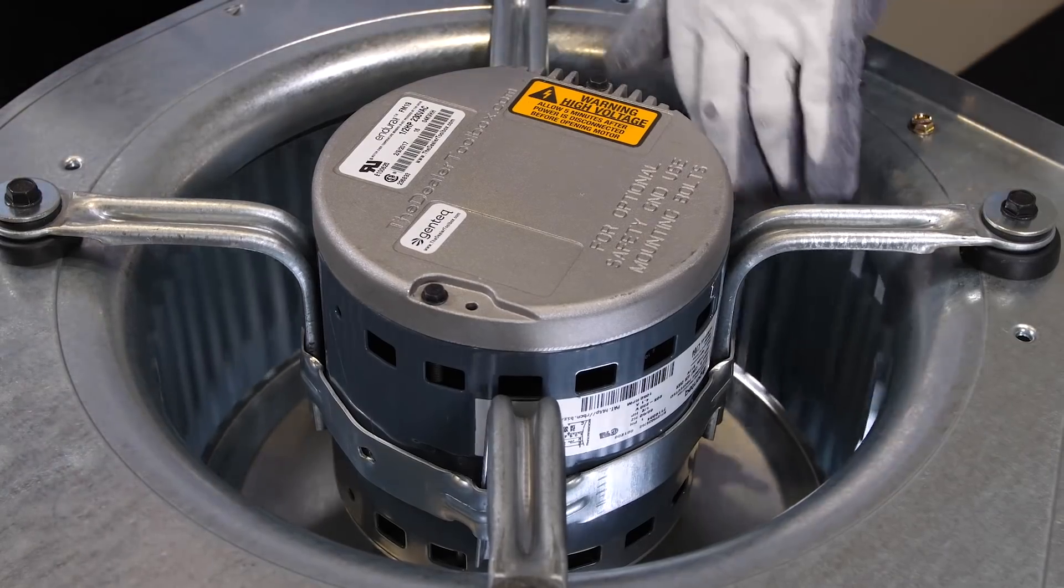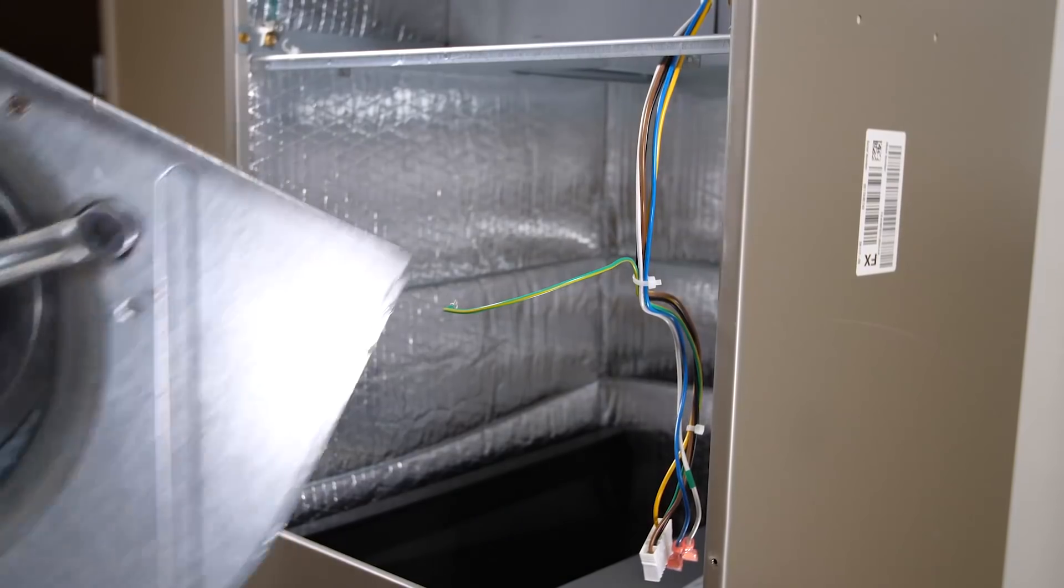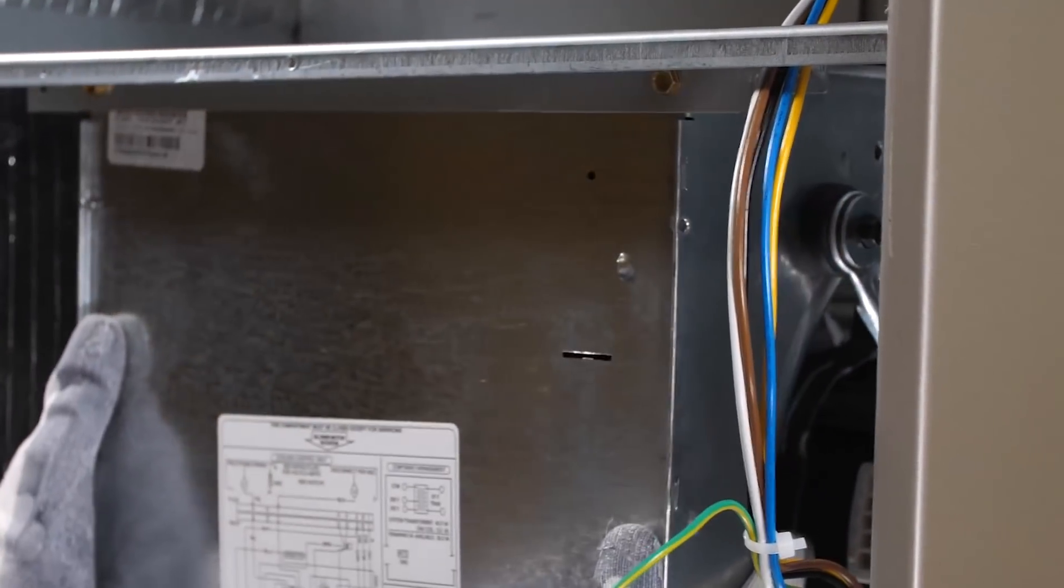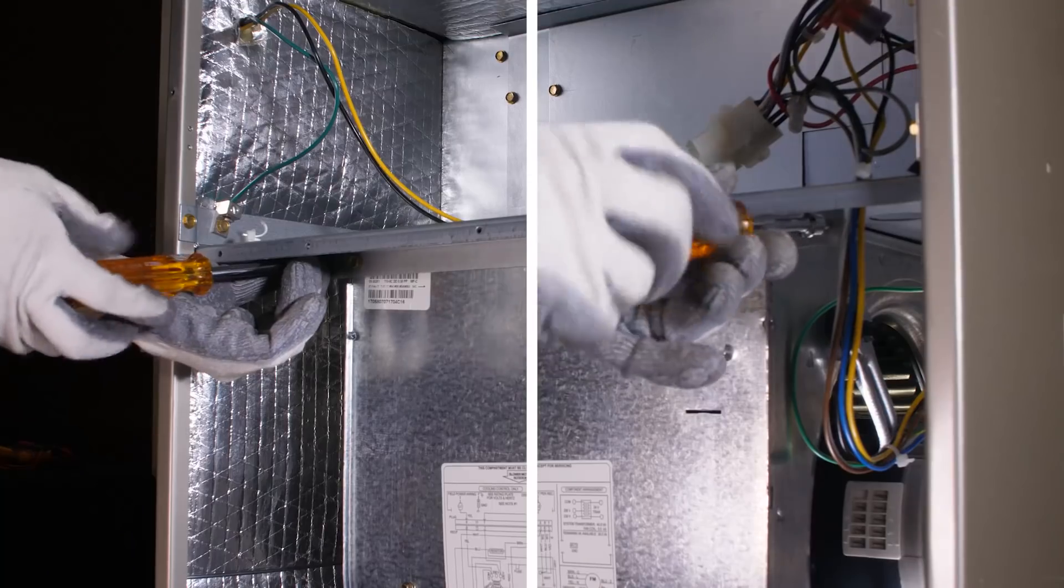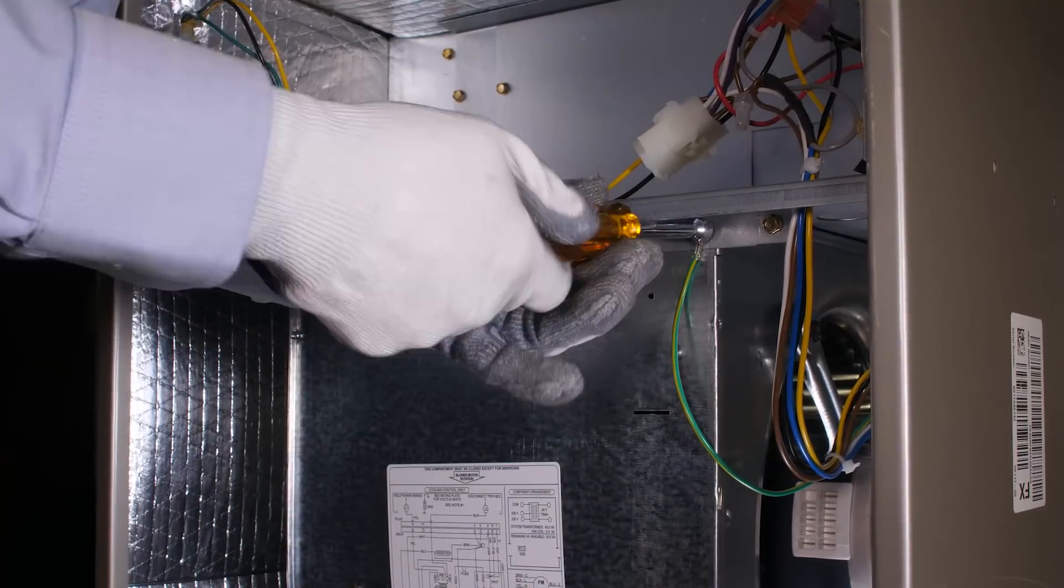Check to see if the blower wheel spins freely. If not, the new control module is defective. Slide the blower housing back into the unit. Insert the two screws to the housing bracket. Insert the screw holding the ground wire.